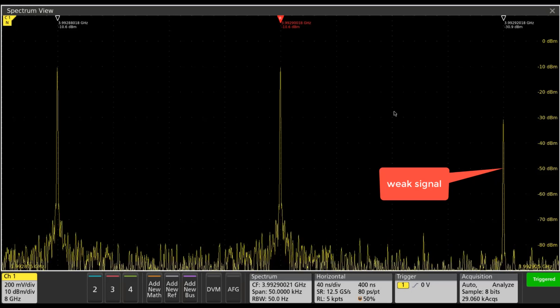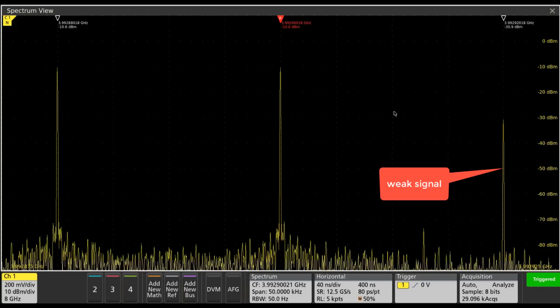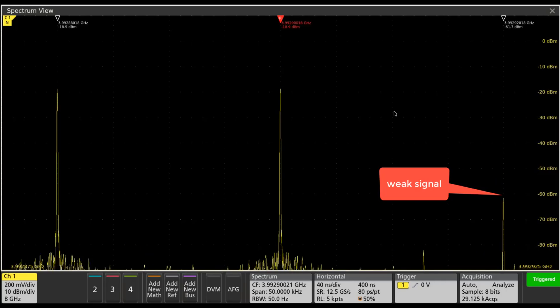If we put some attenuation in the front end of that receiver, if we put 10 dB of attenuation in, we would drop the input signal by 10 dB, but we've dropped that third-order product by 30 dB.